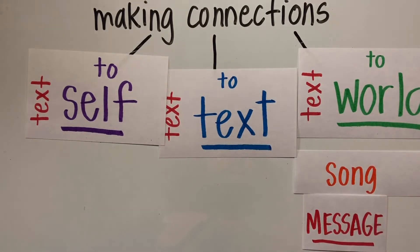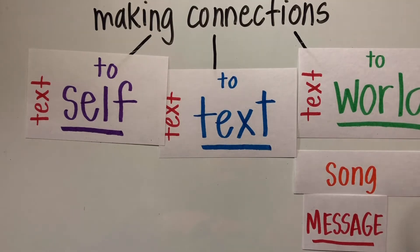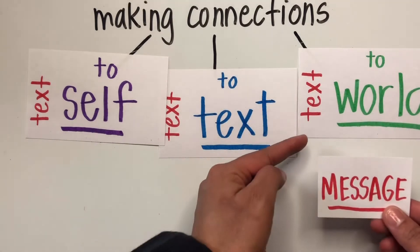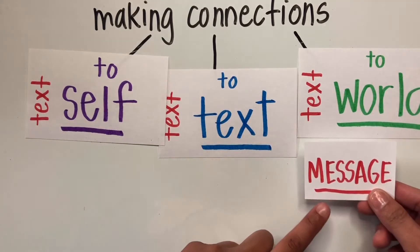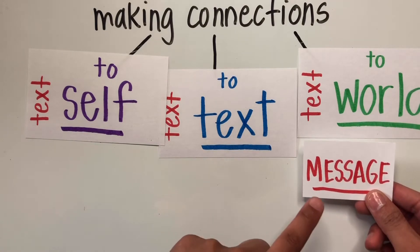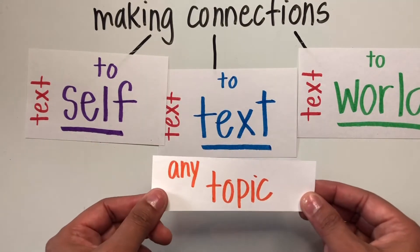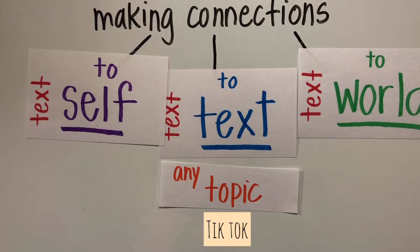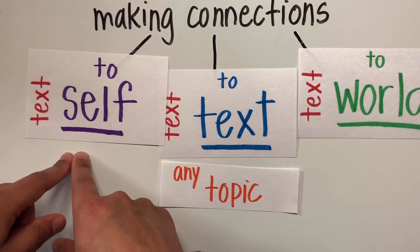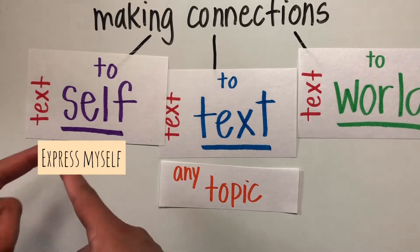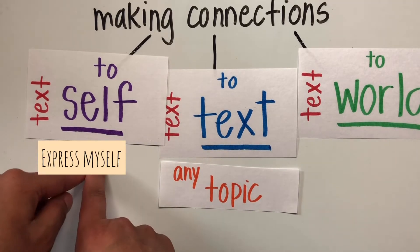Maybe the song is about wanting to be a millionaire. This could be a connection to the world of how human beings want to become better and improve themselves. Text-to-world focuses a lot on the overall message of the text. So you can make connections with basically any topic. Let's take a look at TikTok, for example. I connect with TikTok because it helps me express myself, dance, and sing, and connect with others.